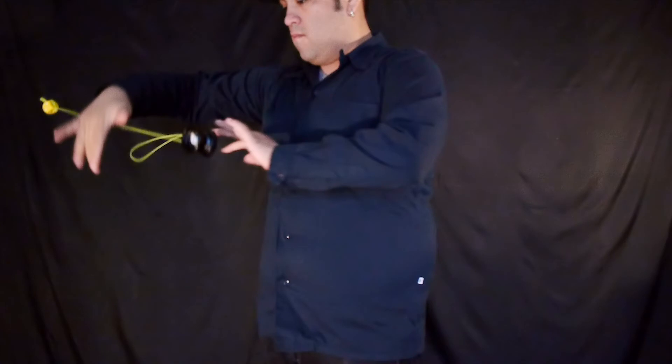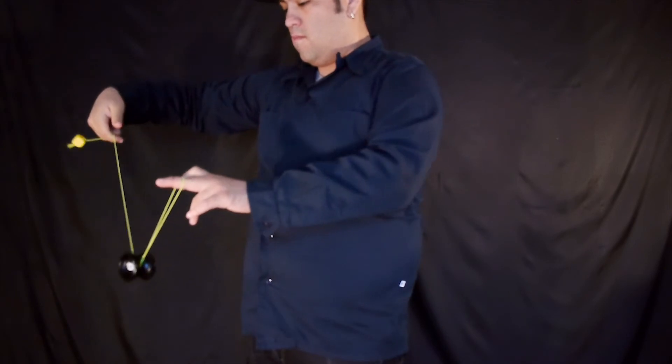Now you're going to grab the string with the counterweight first and then wait for the finger loop. Catch the suicide, bring it up, and then you'll be finished.